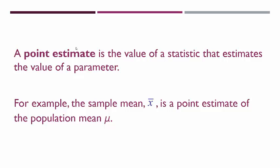For example, the sample mean x-bar is the point estimate of the population mean mu. So when you don't know the population mean and you want to estimate it, you take a sample and compute the sample mean, and that single-value estimate is called a point estimate.